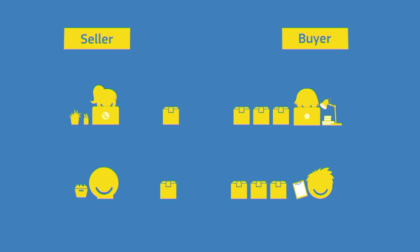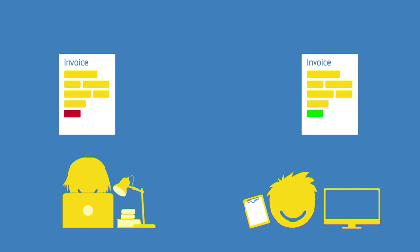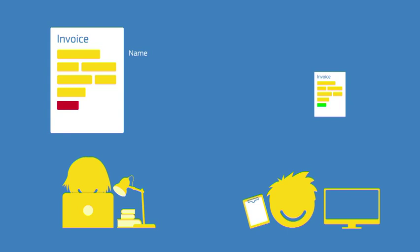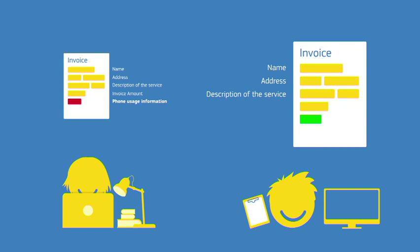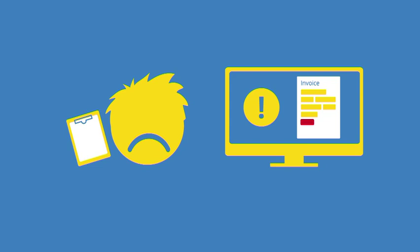Both buyers request goods or services in large quantities and have a long-term relationship with the sellers. Both buyers receive an electronic invoice. When comparing the invoices we see many similarities but there are some differences. In the invoice that Lucy sends to Maria we find the name and address of both buyer and seller, a description of the service, the invoice amounts and phone usage information. Now imagine if Dimitri buys the phone service from Lucy and receives Lucy's invoice. Dimitri cannot properly process the invoice as his computer was expecting to receive the product batch information, but instead got the phone usage information field and hence cannot process it.